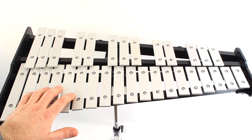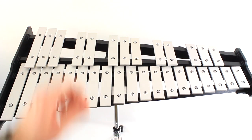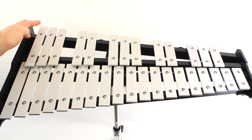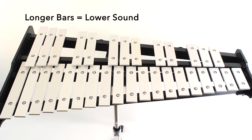We play notes on the bells by striking these metal bars. They're called bars or tone bars. Look at the bars all the way on the left side of your bell kit. You'll notice that the bars are longer, and because they're longer, they're going to make a lower sound.